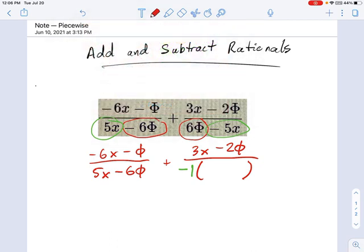If I divide 6 phi by negative 1, I get negative 6 phi. And if I divide negative 5x by negative 1, I get positive 5x. Well now look, these two denominators are actually common. So we don't need to go ahead and multiply by factors on each side. We just need to deal with that negative 1.